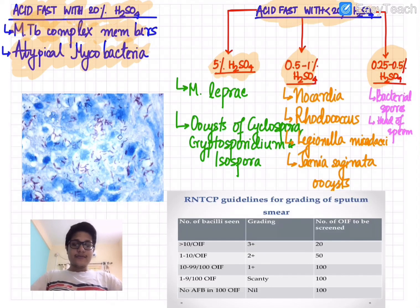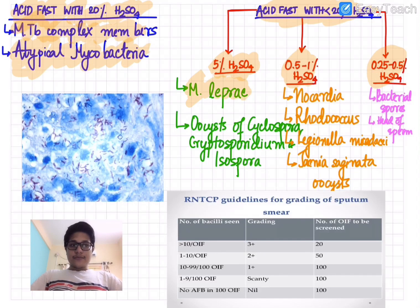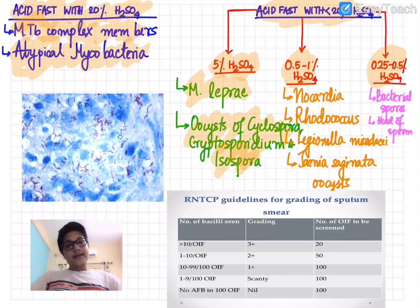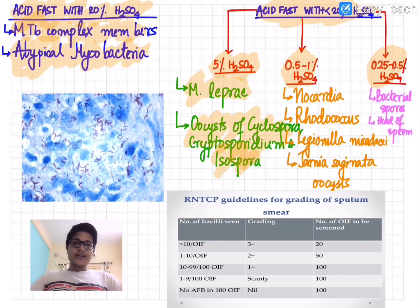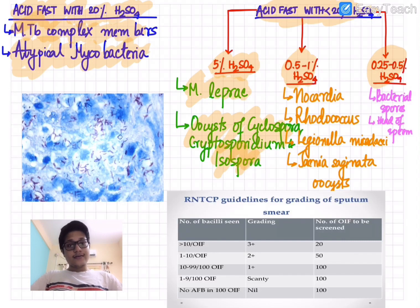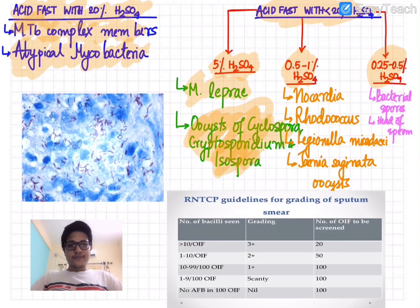With the modified Ziehl-Neelsen stain at 5% sulfuric acid, the acid fast organisms are Mycobacterium leprae and the parasites Cyclospora, Cryptosporidium, and Isospora. These parasites are very important because they cause diarrhea in AIDS patients. When asked about diagnosis in such a case, you should not just stop at HIV — you should also consider diagnosis of these organisms by acid fast staining of a stool sample using this concentration of decolorizer.